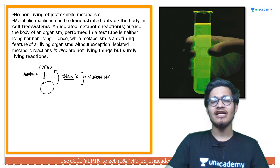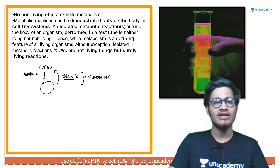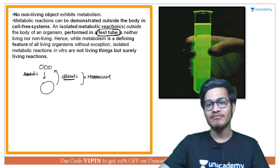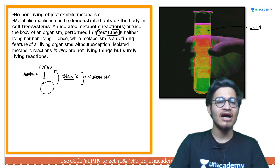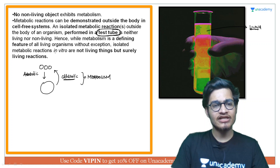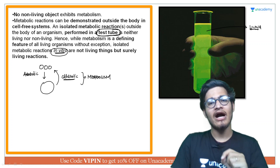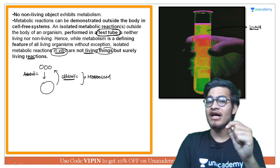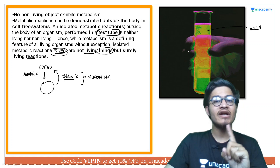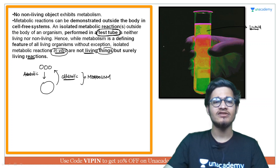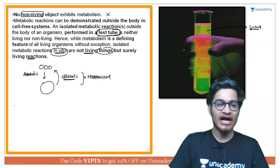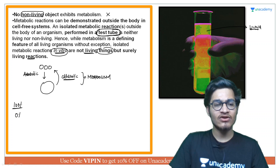Metabolism is very important. Here on the right side you can see a test tube that is glowing. NCERT has a very important line: the reactions occurring in a test tube that are metabolic reactions are neither living nor non-living reactions — they are living reactions. But you cannot call the test tube a living organism. If the same reaction occurs outside your body under the same conditions — in vitro — it is a living reaction but not a living thing. A test tube doesn't become a person just because a reaction happens in it. Any non-living object does not have metabolism. That's why metabolism is a characteristic feature — it is 100% present in all living organisms and 0% in non-living things.